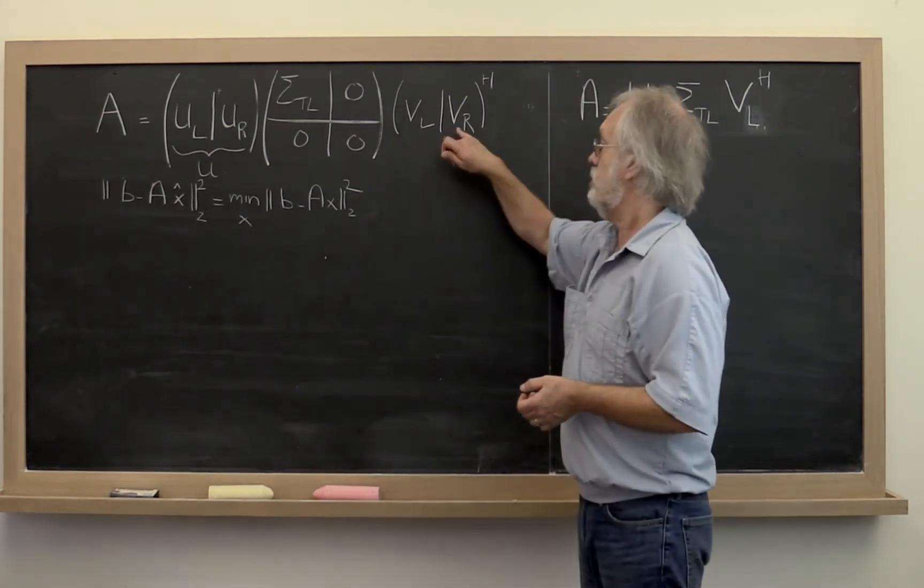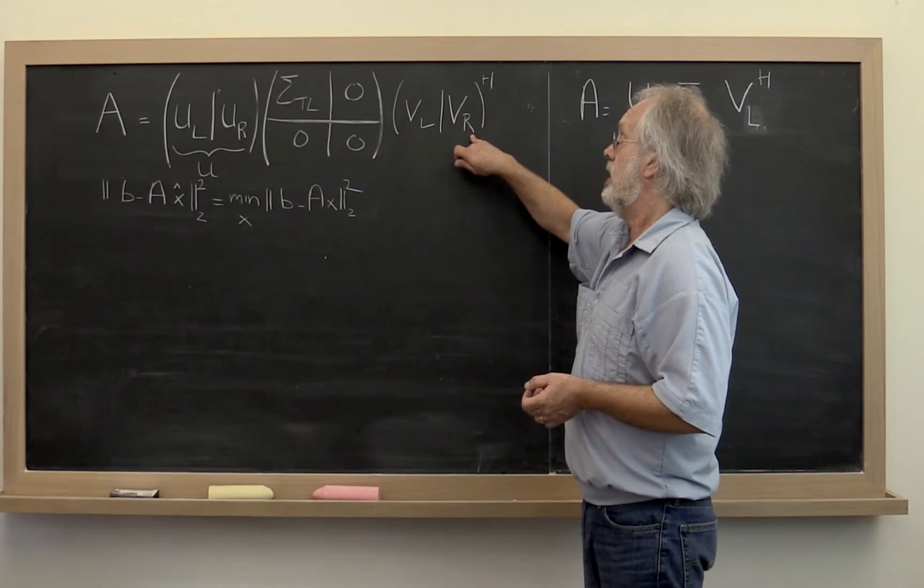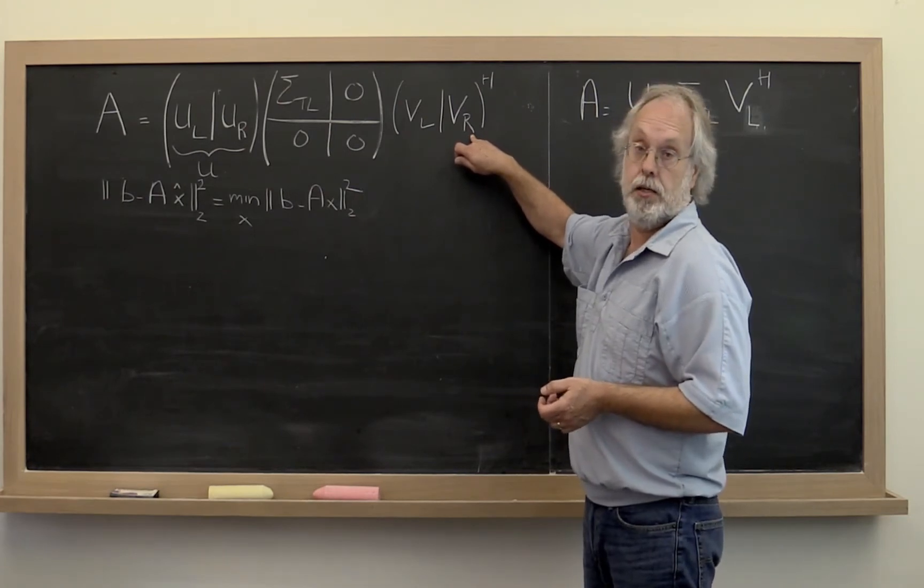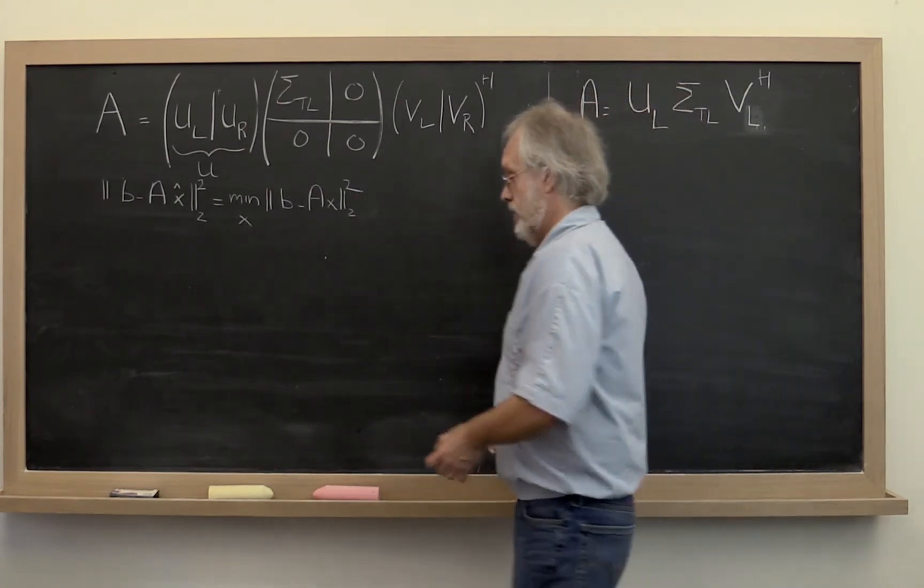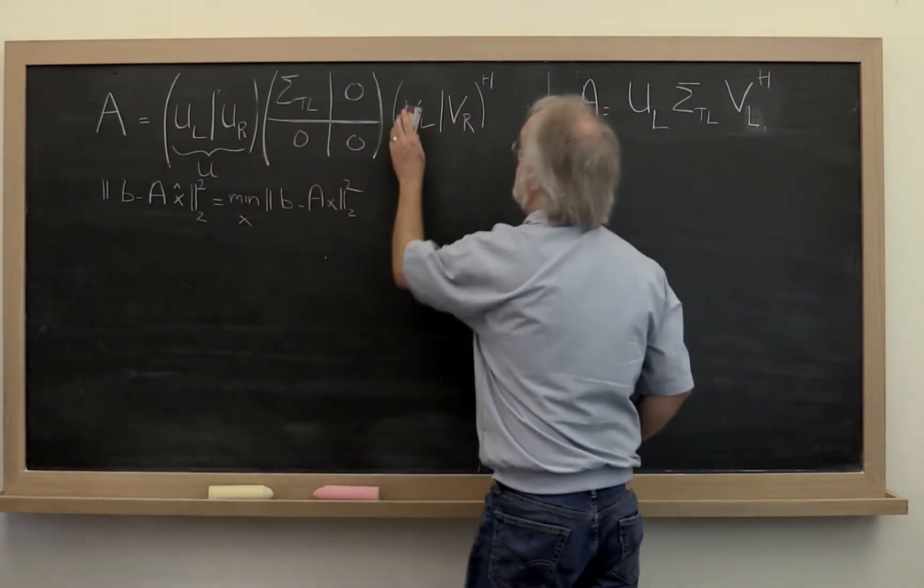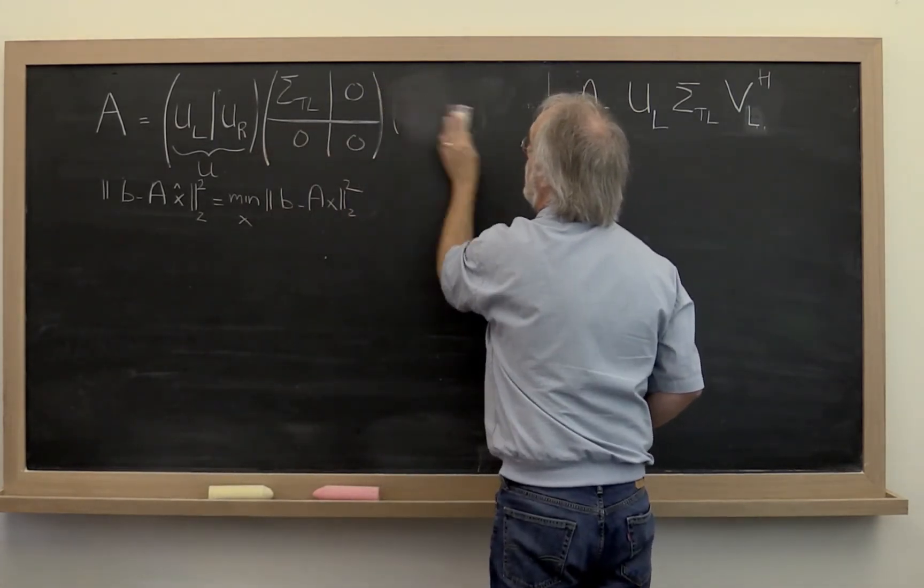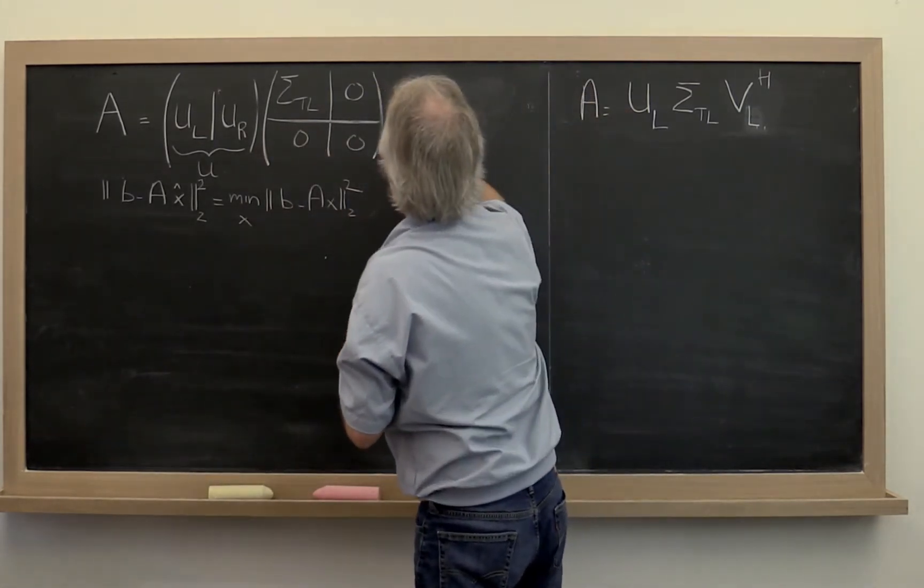And if you think about it, what that means is that V right has no vectors in it. And therefore this particular matrix right here is really all of the unitary matrix V.